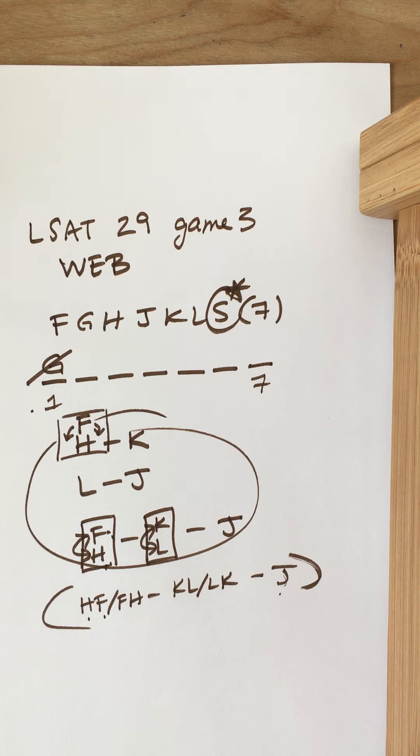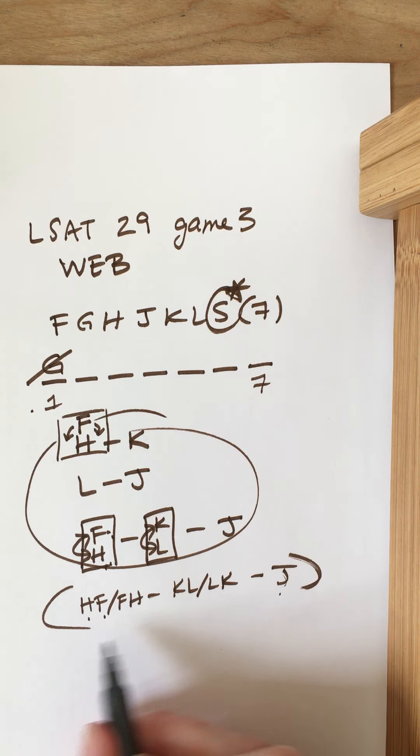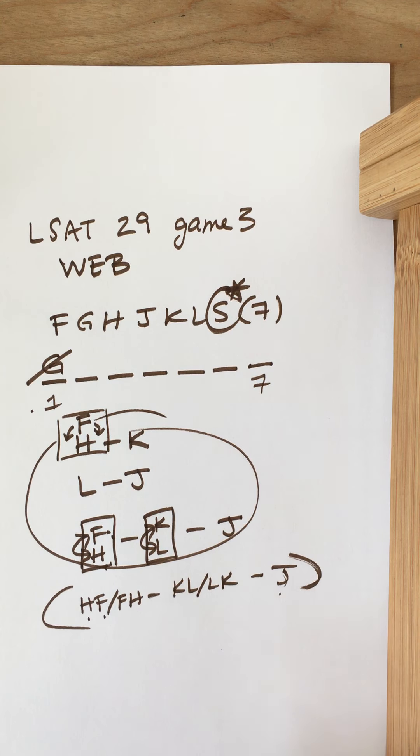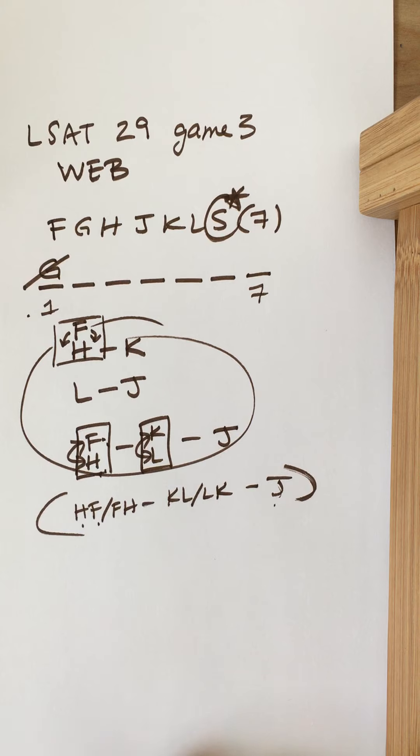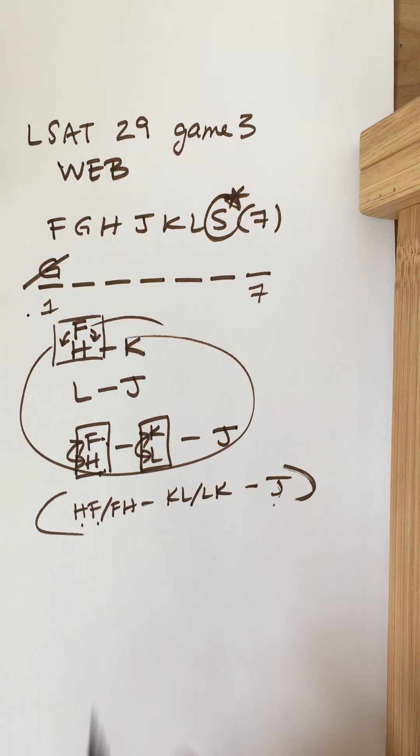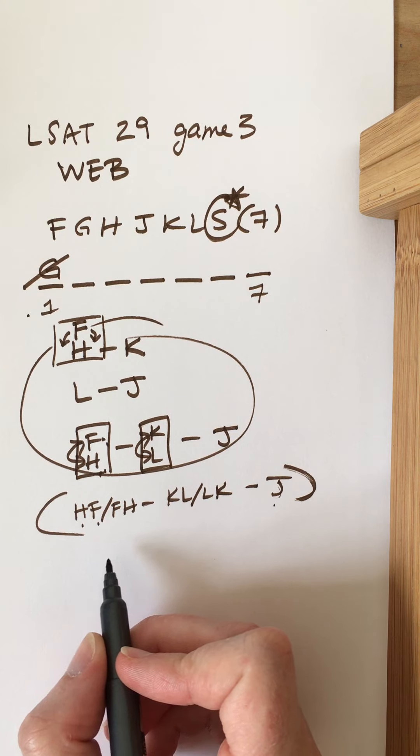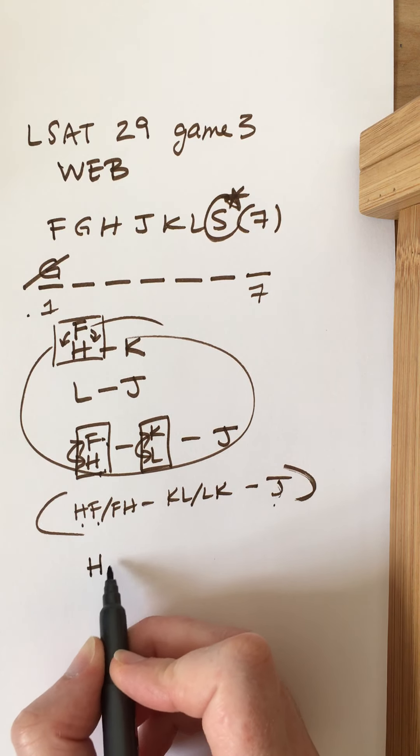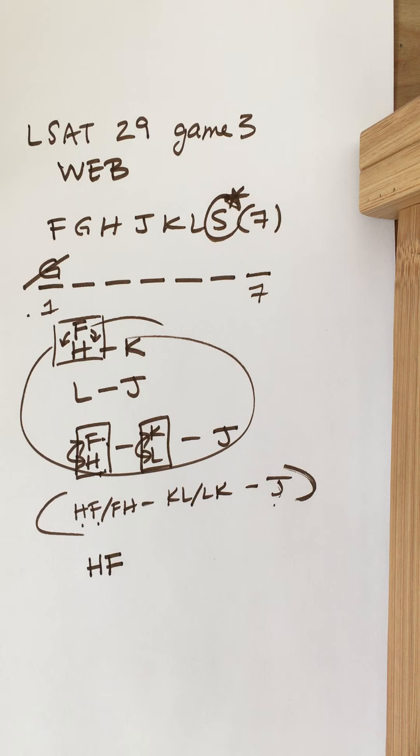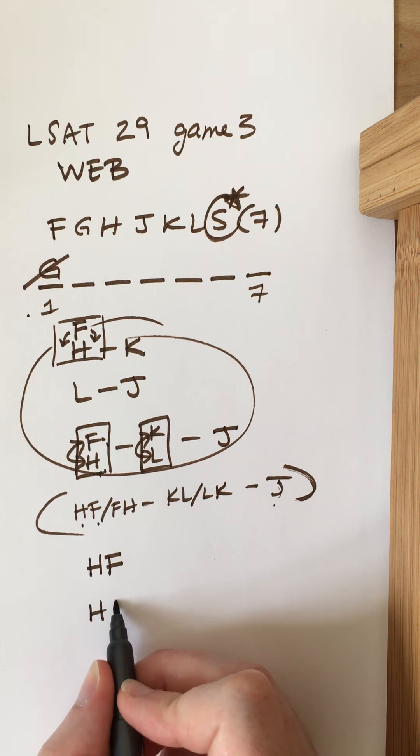Yeah, so I mean there's also the possibility here of sort of splitting the worlds, but then you're gonna end up with four different possibilities. I'll show you just for the sake of the practice and just sort of demonstrating how you would actually end up with four.